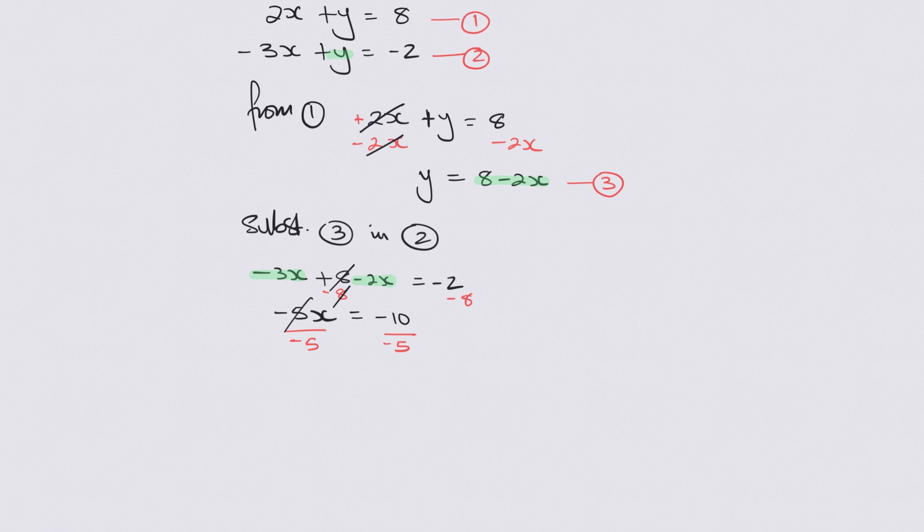And then now we obviously divide by negative 5 on both sides to get rid of the negative 5. Don't forget we're trying to find x. That cancels out. x will now equal 2.